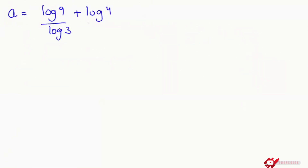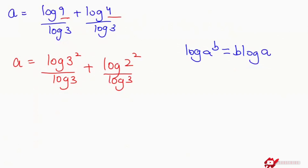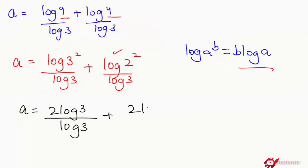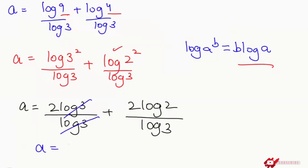Now log of 3 is dividing with both numerators, so I'm going to write both numerators separately. Next I'm going to change these in the form of powers. So a equals log of 3 squared over log of 3, plus log of 2 squared over log of 3. Applying the log power rule again, this becomes a equals 2 log of 3 over log of 3 plus 2 log of 2 over log of 3. At this point we get a equals 2 plus 2 log of 2 over log of 3.